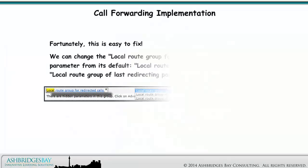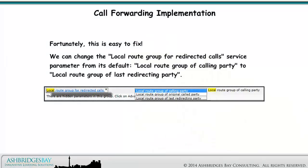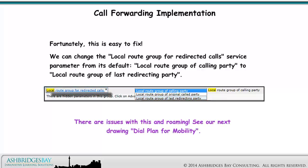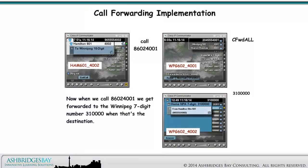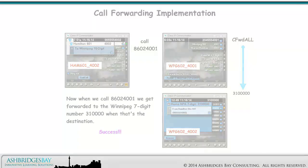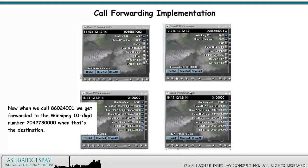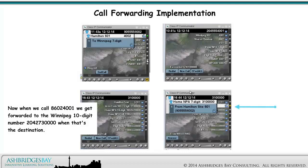Fortunately, this is easy to fix. We can change the local route group for redirected calls service parameter from its default — local route group of calling party — to local route group of last redirecting party. There are issues with this and roaming; see our next drawing, Dial Plan for Mobility. Now when we call 8602-4001, we get forwarded to the Winnipeg 7 digit number 310-0000 when that's the destination. Another success!